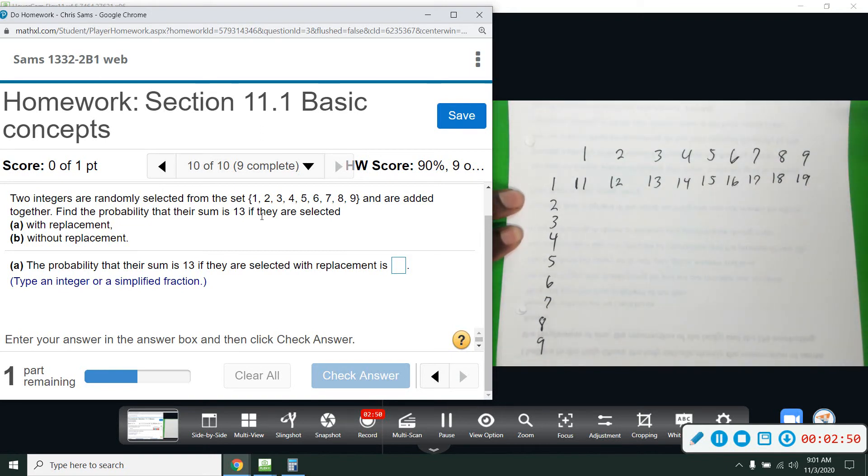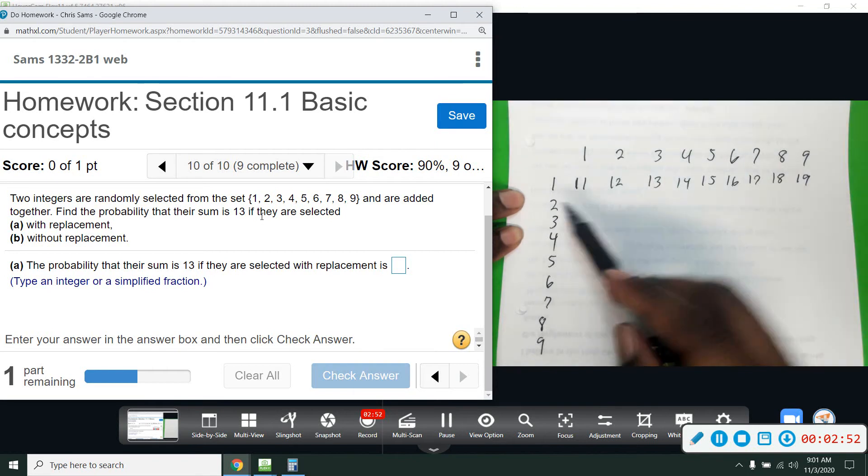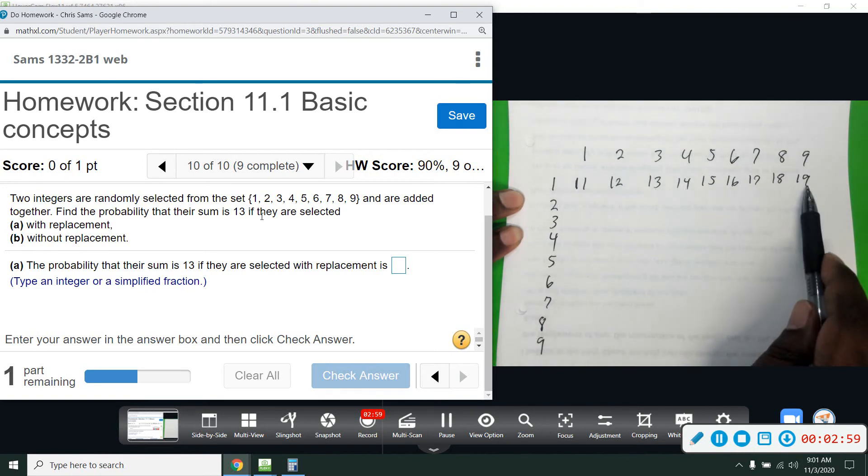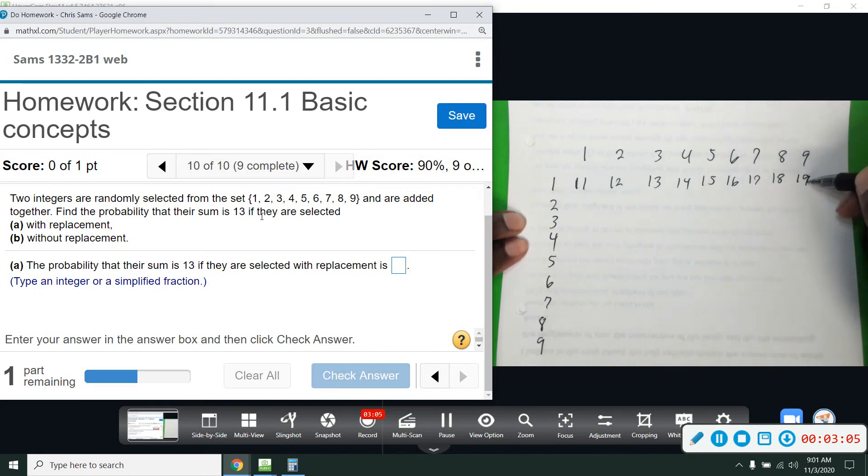All right. So what numbers will add to be 13? None of these. That would be two, three, four, five, six, seven, eight, nine, 10. So we don't get to 13 until, let's just say, let's go from nine. Nine and two is 11, 12, 13. So nine and four right here. Nine and four, let's actually say four and nine. Four and nine.